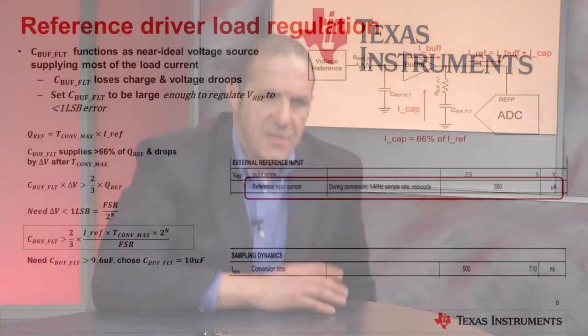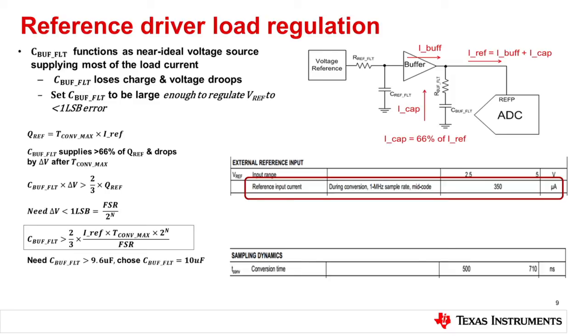For load regulation, we have the buffer, the capacitive load, the snubber network, and the ADS8881. The key is that the buffer capacitor output — capacitance multiplied by voltage — must be greater than two-thirds of Q_ref, the charge of the reference voltage. Cranking through the math gives us a 10 microfarad capacitor value. Thank you for watching this edition. I'll see you next time to discuss more details about the rest of the circuit for the TI reference design around the ADS8881.